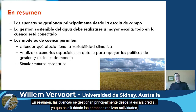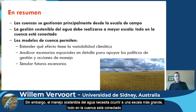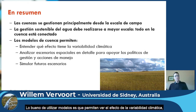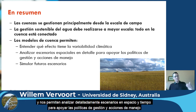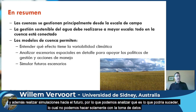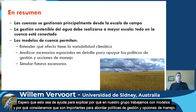In summary, catchments are mostly managed at local fields because that's where people operate. However, sustainable water management really needs to happen at the larger scale — everything in the catchment is connected. Catchment models allow us to understand the effect of climate variability, perform detailed spatial scenario analyses to support management and policy, and simulate into the future to look at options. We can't do that with data alone. I hope that explains why we work with models and why we think models are important for policy and management. Thank you.